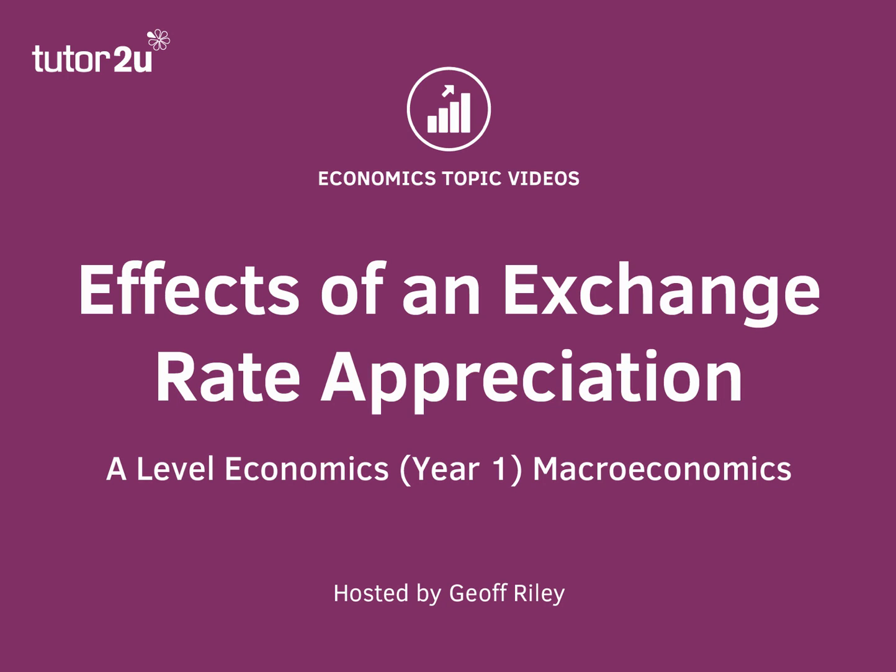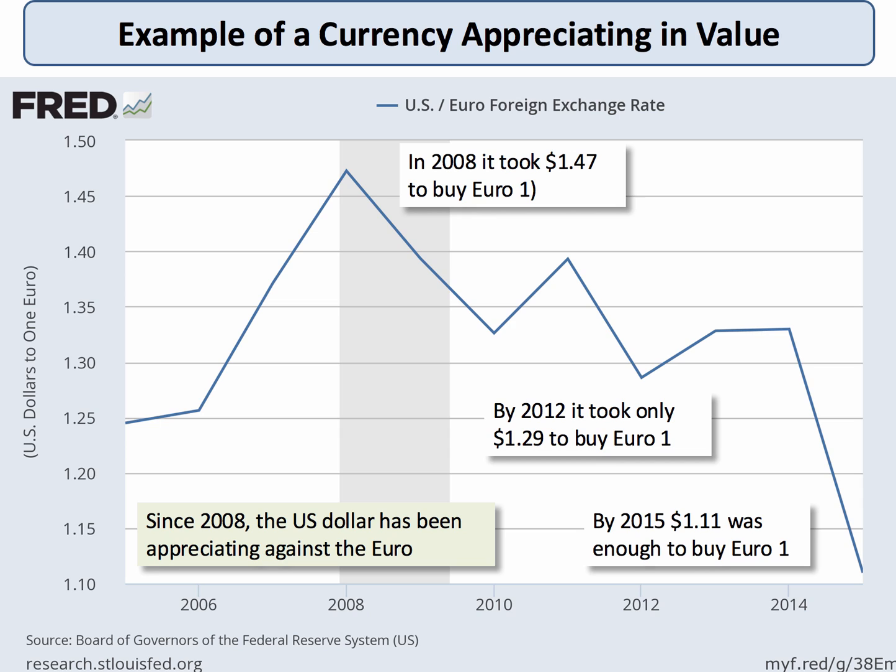In this short topic video we're going to look at some of the consequences of an exchange rate appreciation. Here's an example: the US dollar has risen in value against the euro. Go back to 2008 — it would have cost $1.47 to buy one euro. By 2012 it was $1.29, and by 2015 you could buy one euro for $1.11. This chart suggests the US dollar has appreciated in nominal terms against the euro.